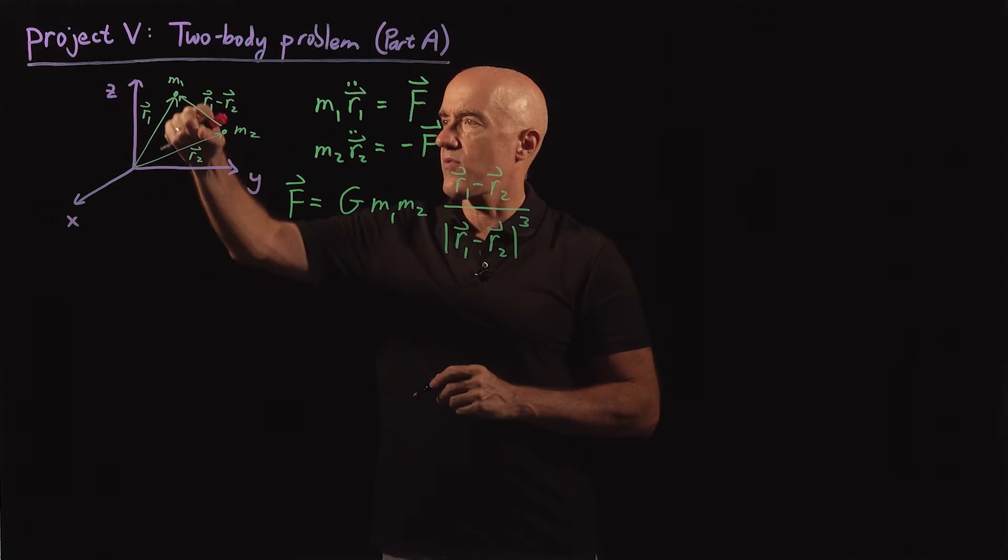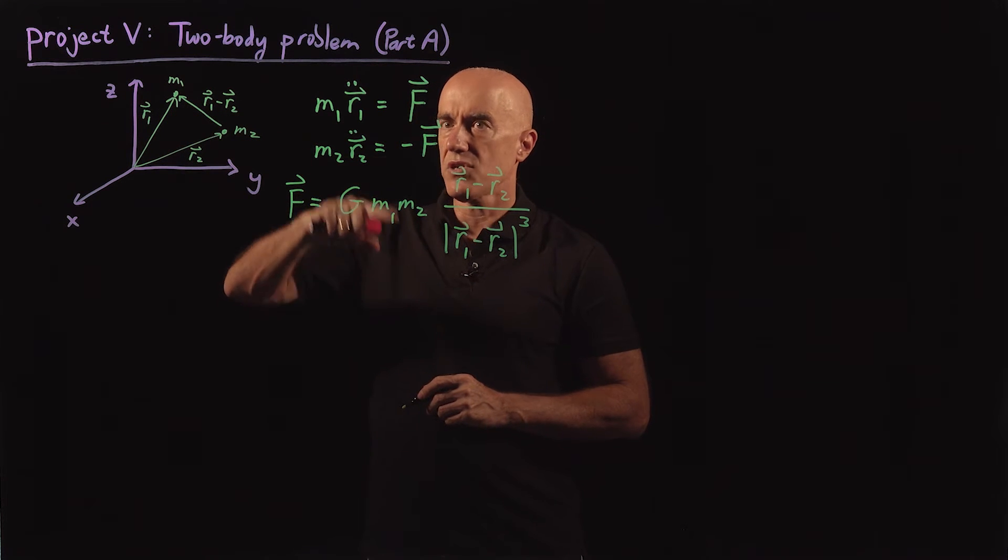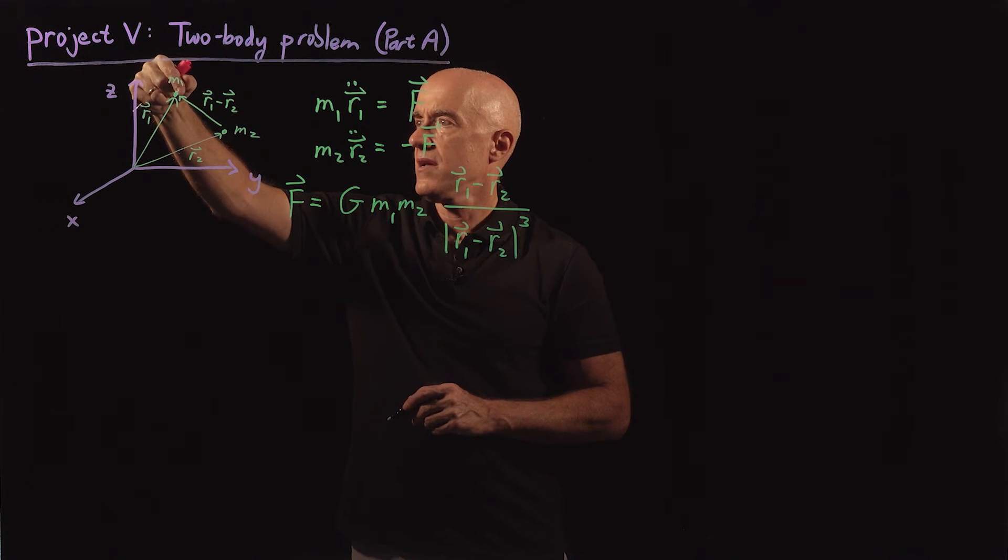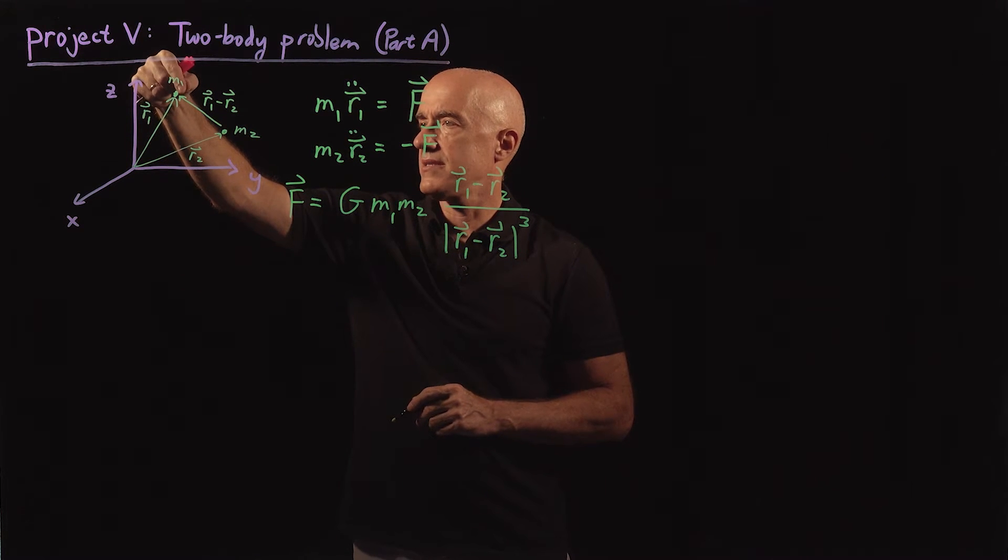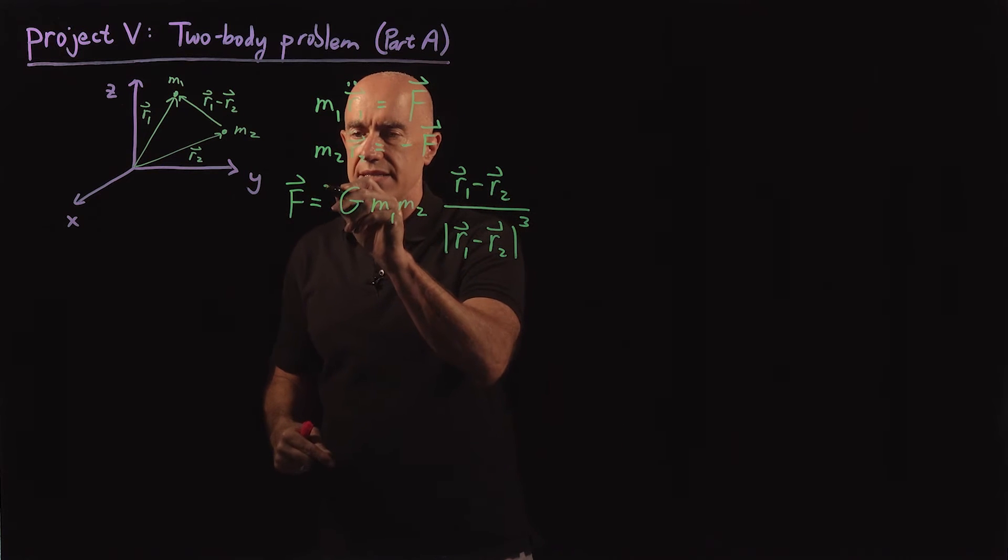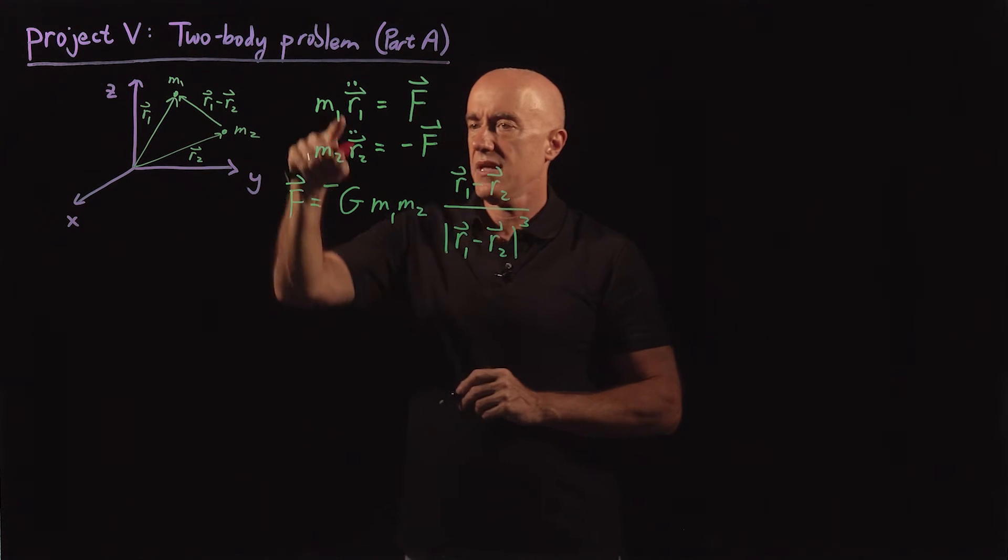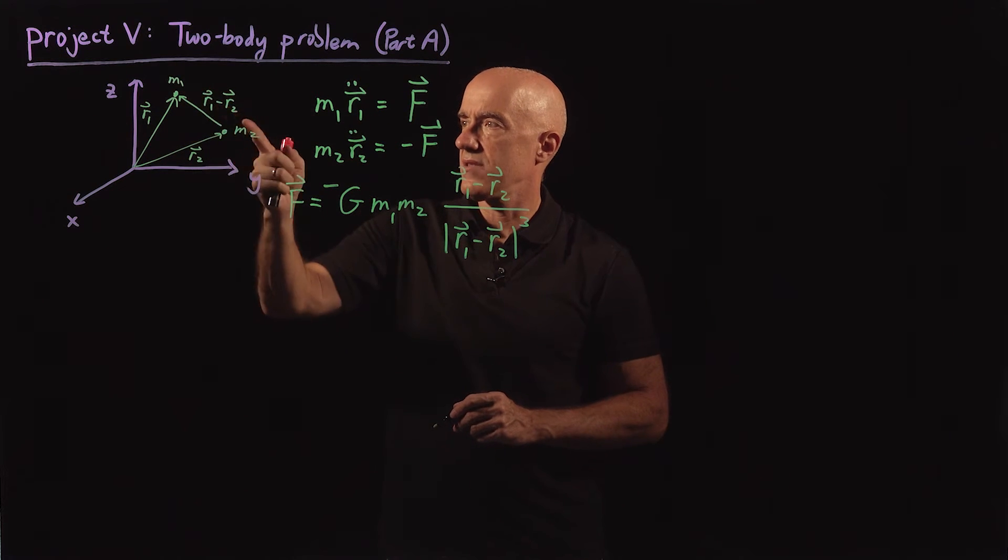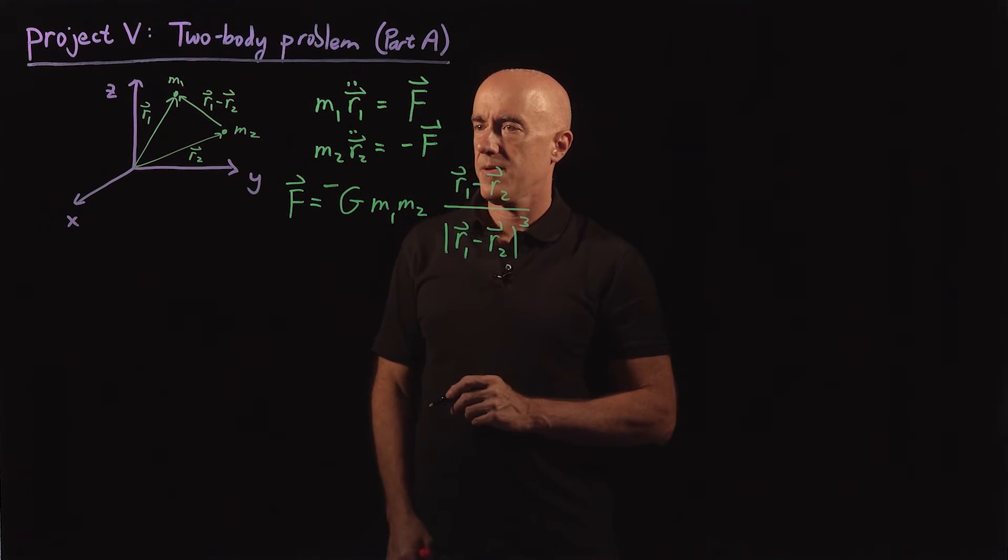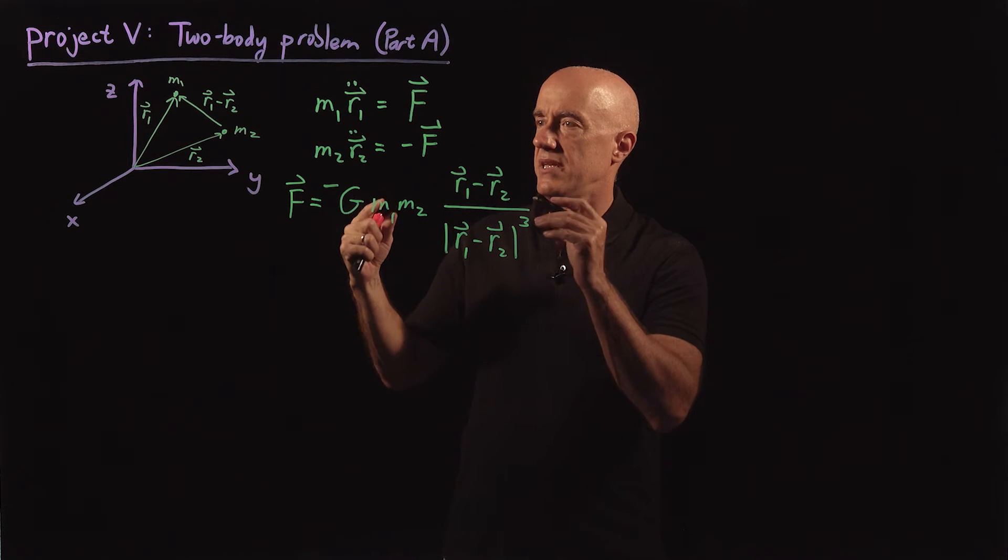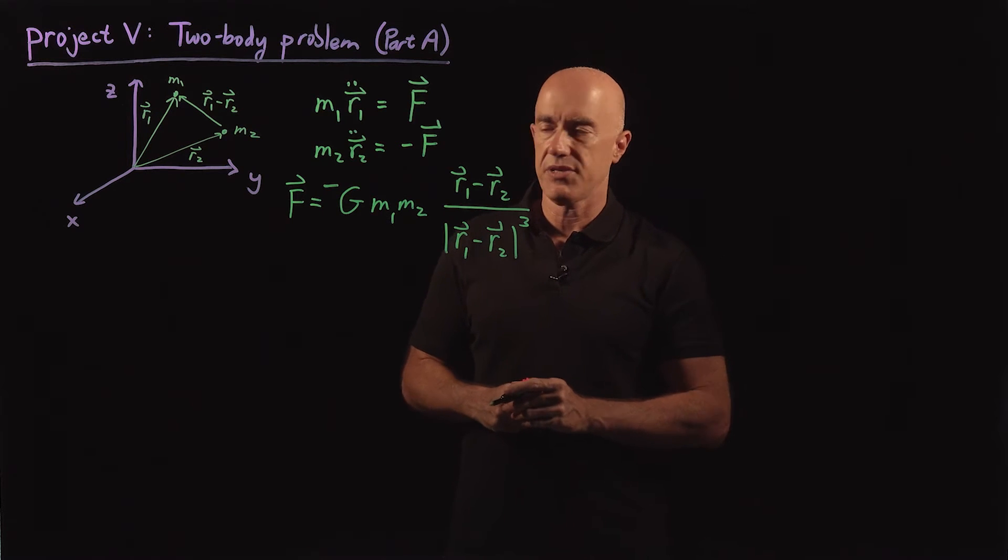And we have to get the sign right. So this is F, the force on m1. The force on m1 is in the opposite direction of r1 minus r2, pointing from m1 to m2, so this gets a minus sign. Then the force on m2 is minus F, pointing towards m1. Those are the governing equations, completely general governing equations.